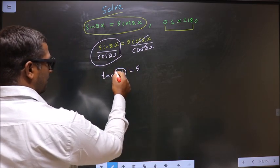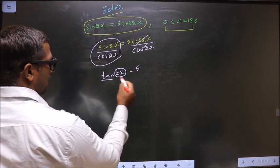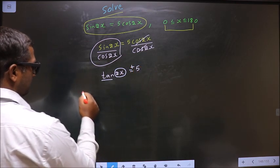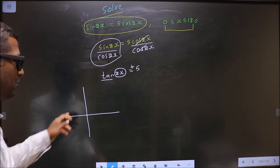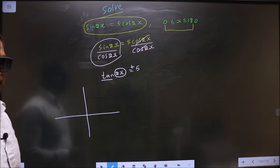Now, to get the values for 2x, here we have tan and it is positive. So now you check, in what all quadrants is tan positive?